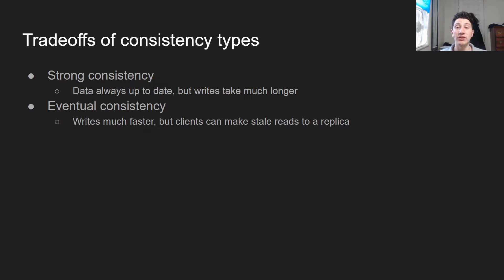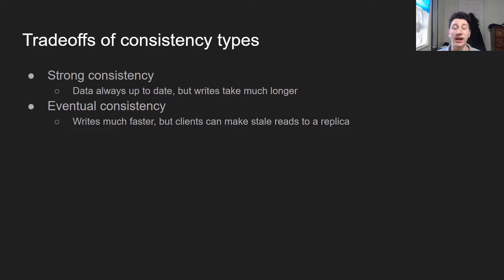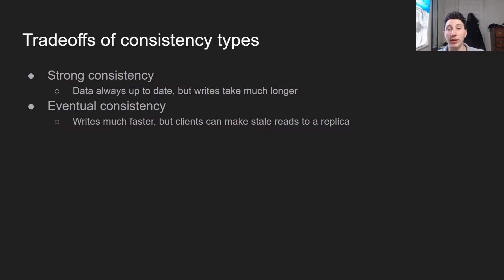The trade-off is: with strong consistency, the data is always up to date and you're never going to make stale reads. However, writes basically take forever because they potentially have to go all the way across the globe, waiting for all that network transport. Eventual consistency leads to much faster writes, but you have to deal with the perils of having eventually consistent data, which means you might make some stale or incorrect reads.